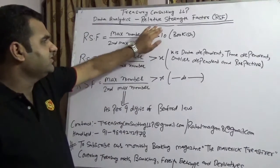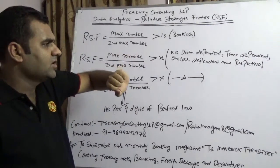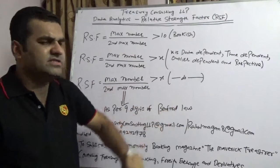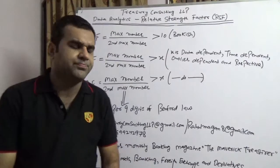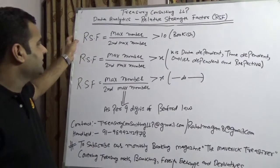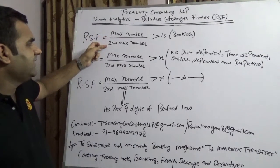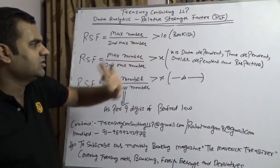But I am going to go in a different way. I am going to use a technique which is known as Relative Strength Factor, and I am going to introduce you to the various types of levels of Relative Strength Factor. Now what does Relative Strength Factor stand for? RSF is nothing but maximum number divided by second maximum number. If it is greater than 10, then there is a fraud.